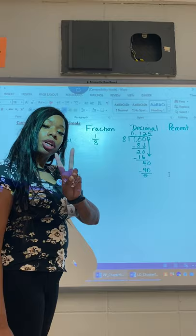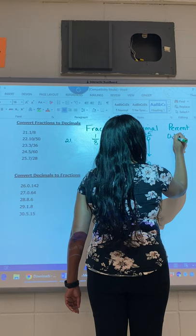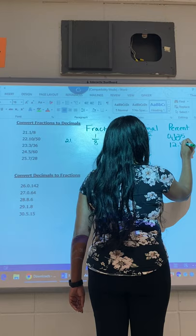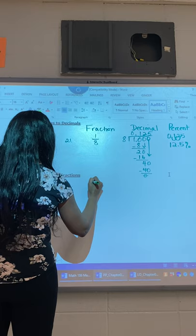One eighth, the decimal is 0.125. Well Ms. Thomas, it didn't ask for a percent, but what is the percent? I want you to move the decimal two places to the right. So the decimal is in between the zero and the one. If you move it twice, one, two, it's in between two and five. So this will be 12.5 percent. I think you have it. I don't think you're going to have any problems out of these decimals.